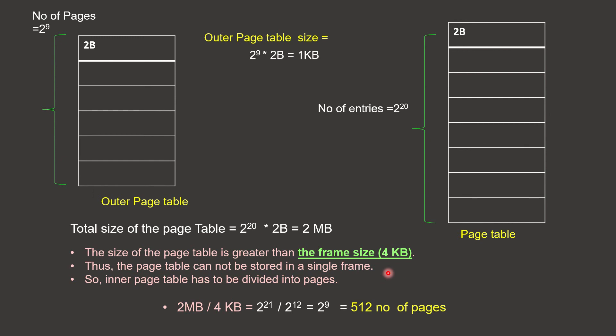We divide the entire page table and store it in memory. This gives us a mapping structure for address translation — we can convert a logical address to a physical address and fetch the particular page. We have a multi-level paging scheme with an outer page table and inner page tables.